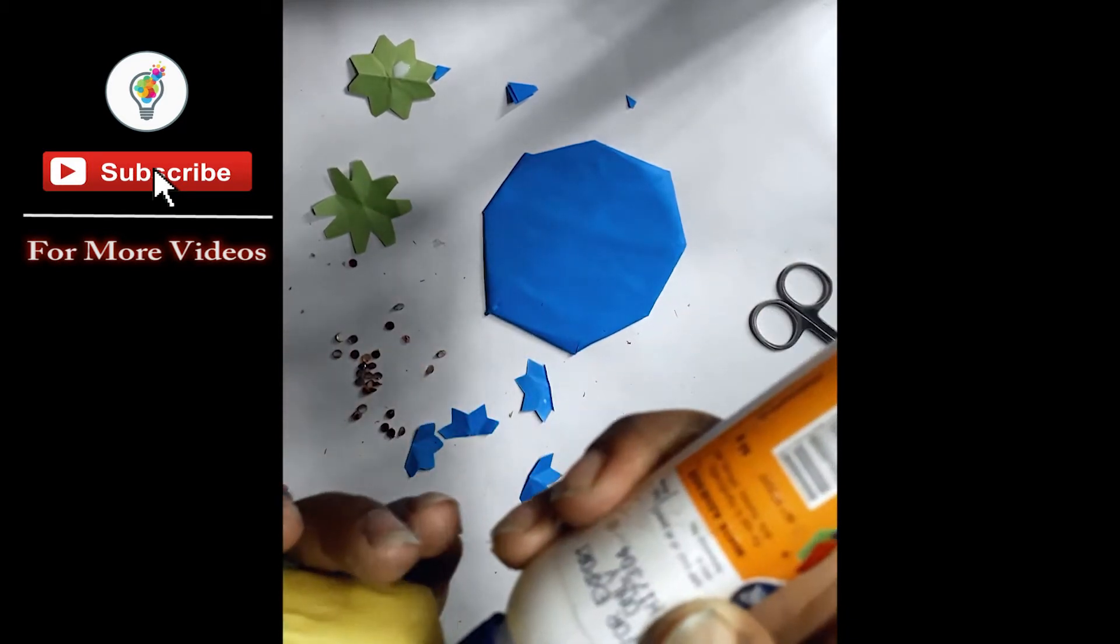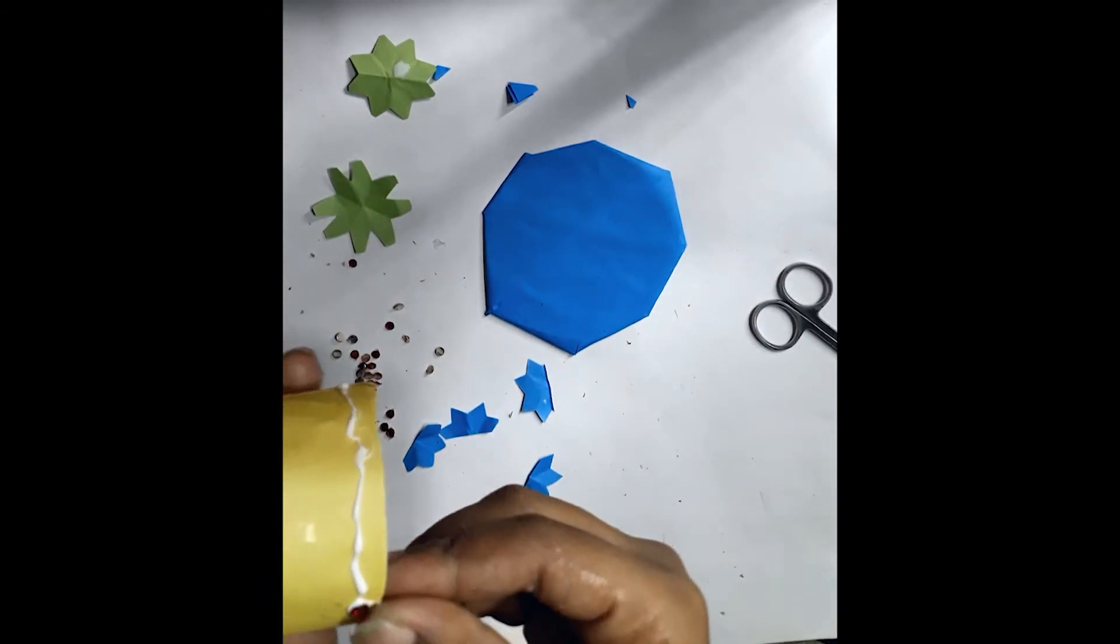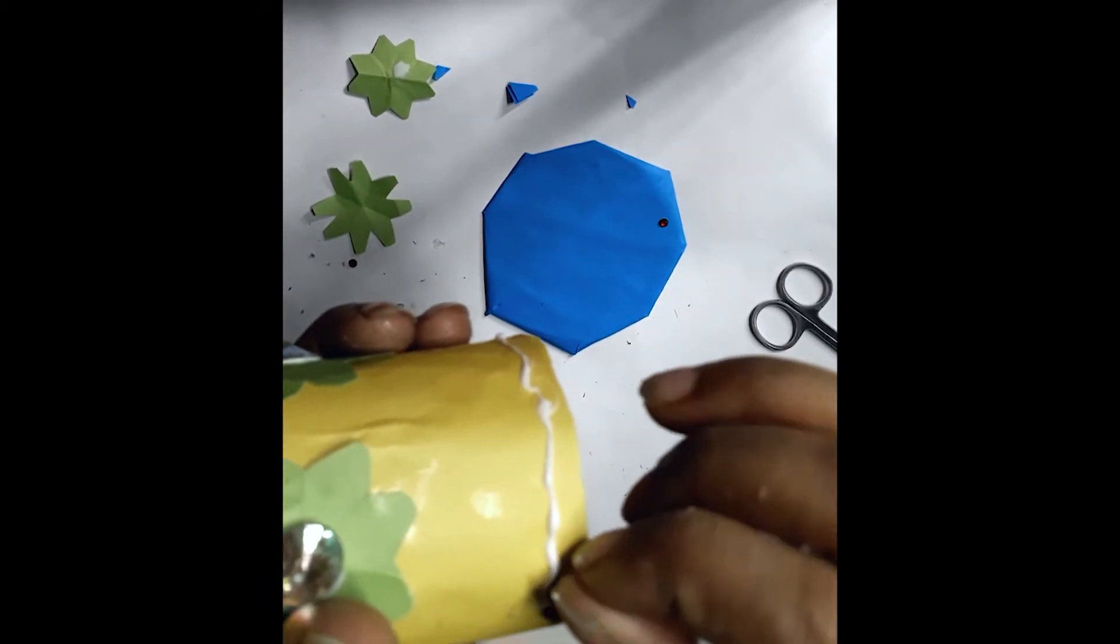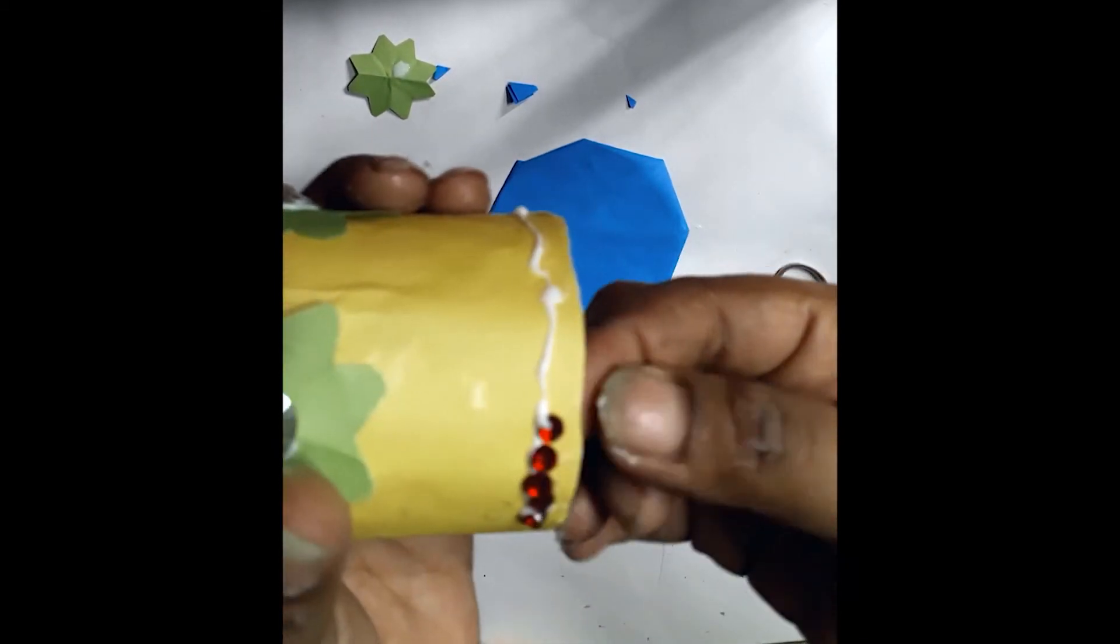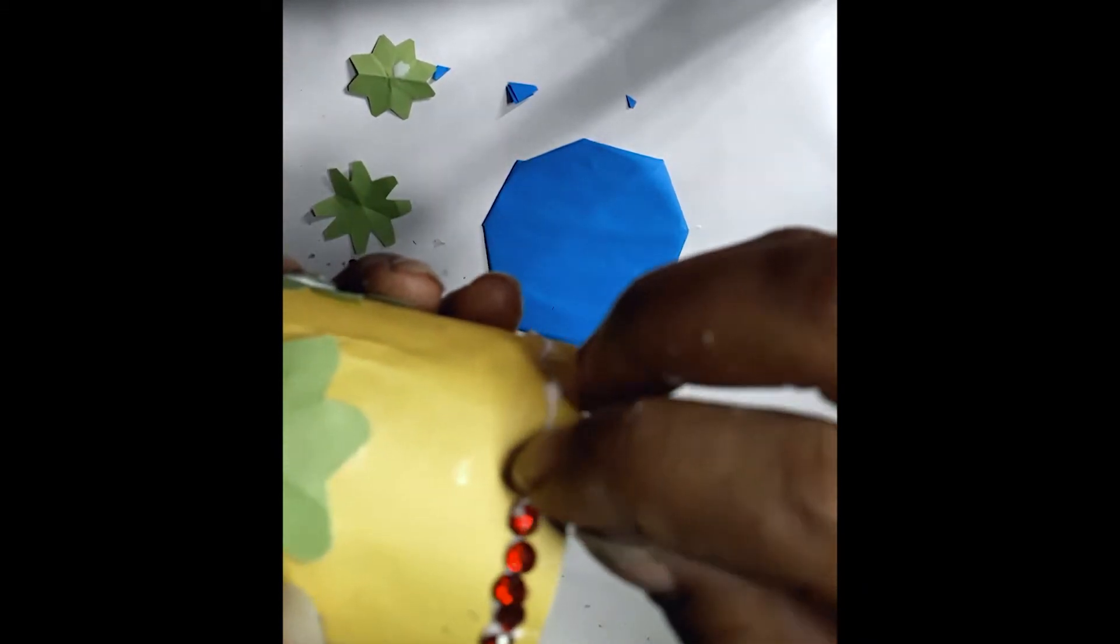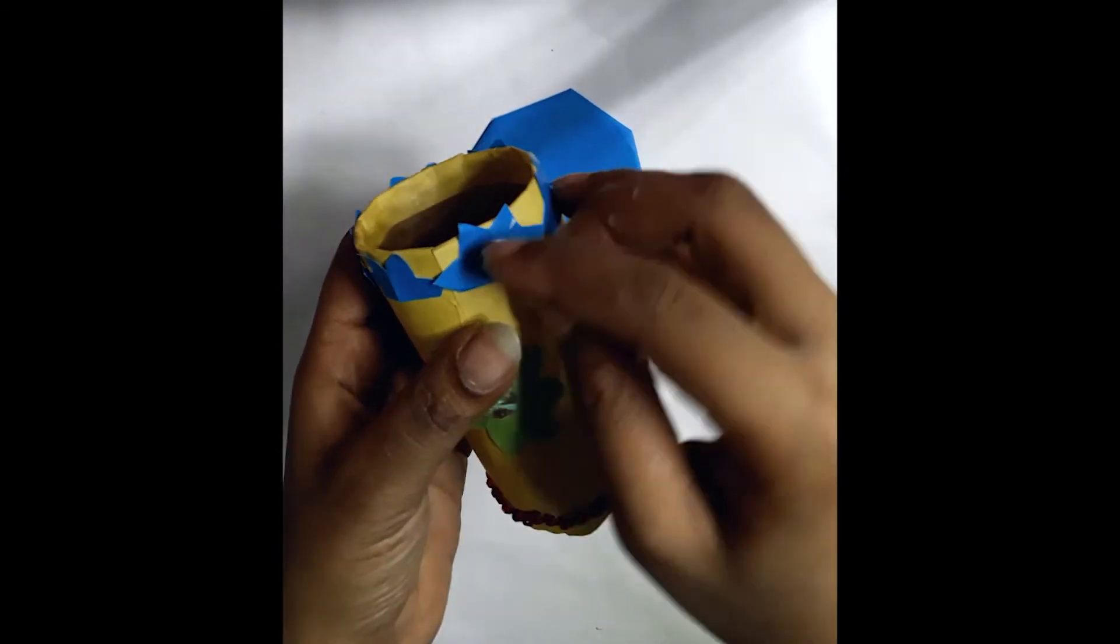Attach some patty with glue on the bottom of the tissue box. And attach some patty with glue on top of the tissue box also.